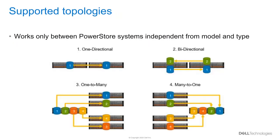Dell EMC PowerStore systems support the following replication topologies between PowerStore arrays, regardless of model and type. One-directional is replication of one or more individual storage resources from one PowerStore system to one other. Bidirectional is the same as one-directional but in both directions at the same time. Another supported topology is one-to-many, meaning replication from a single system to different remote systems — up to eight remote systems are supported.